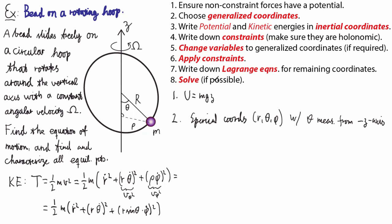The potential energy we already started writing. Now we're not going to use z since that's not a spherical coordinate. Instead, what we're going to get is M*G*R*cosine(Theta). The negative sign here comes from the fact that we are measuring Theta from the minus z-axis, so that when Theta is zero degrees we get minus MGR, and when it is 90 degrees we get zero for the potential energy, as it should be.